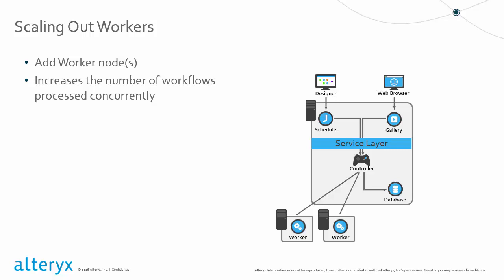The Alteryx recommendation is to assign each worker node the number of simultaneous workflows for processing equal to half of the number of the machine's physical cores. For example, if the node acting as the worker has four cores, the recommendation would be to allow a max of two simultaneous workflows to be running on that node at any given time. More concurrent workflows can be assigned to each node, but the server will typically see a degradation in performance due to computing and I/O competition between all the processing workflows.